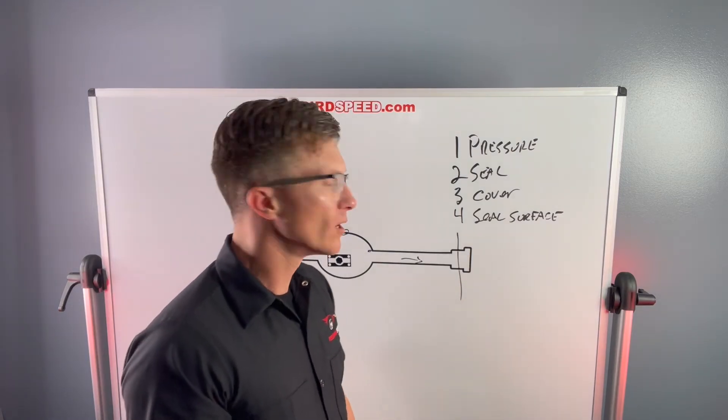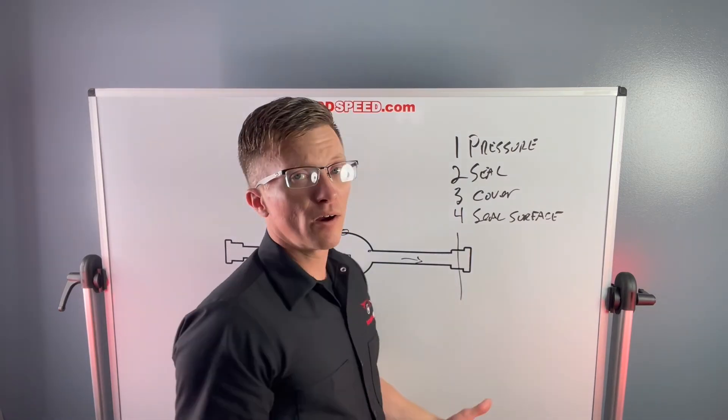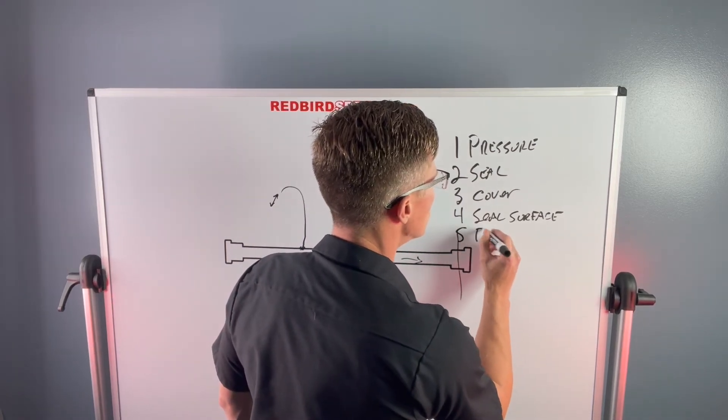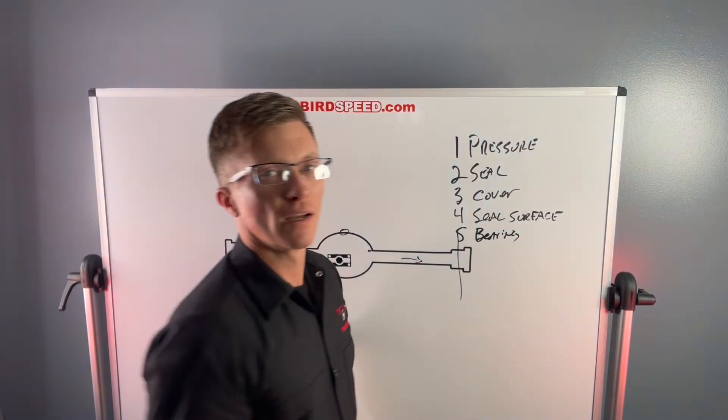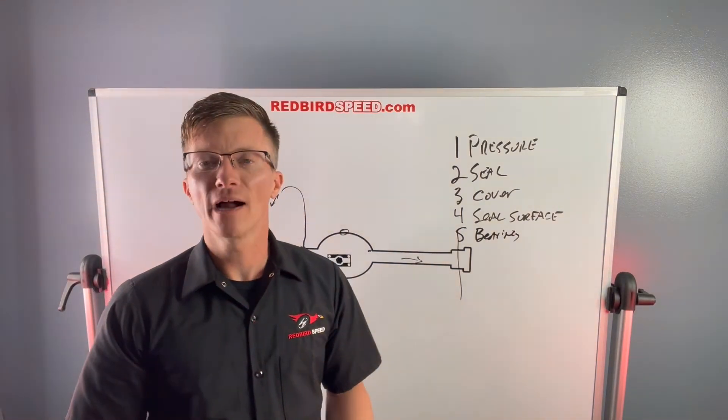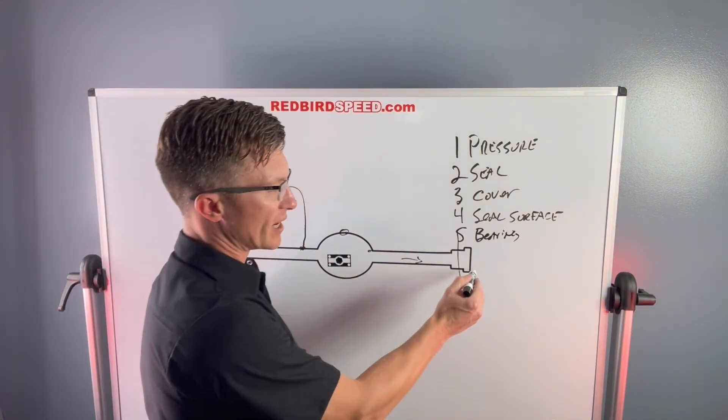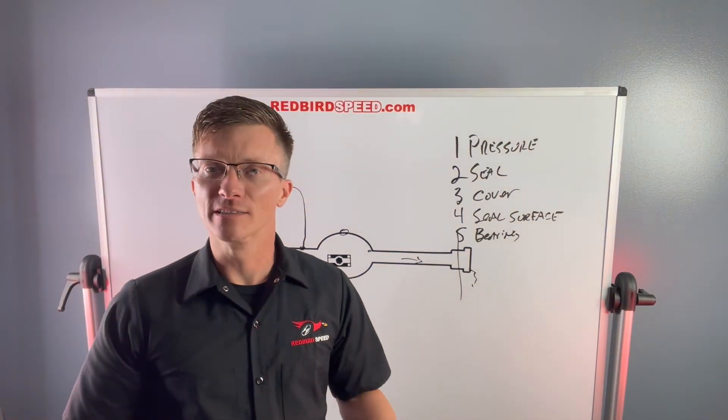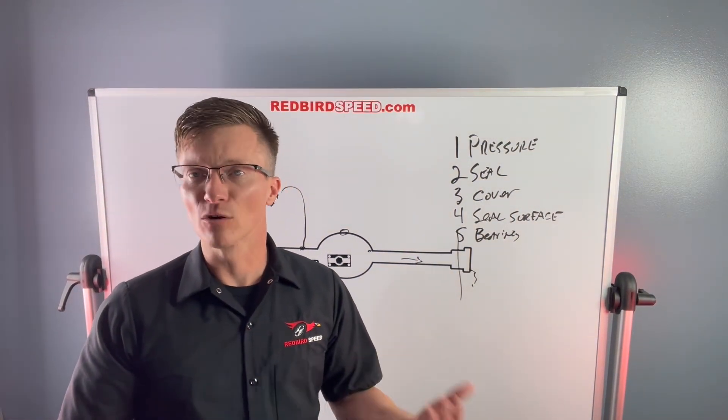Number five, leaking rear end. Is it gear oil or is it bearing? Because sometimes you get that bluish blackish bearing grease coming out, seeping out of a housing end or something. You got to figure out, is it the bearing going bad or is that gear oil coming out of there?